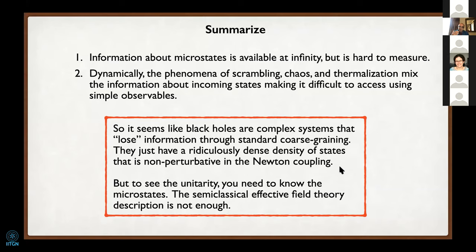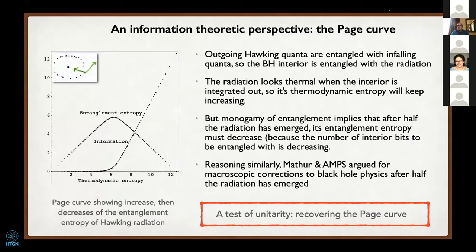In this language it would appear that to see the unitarity of a black hole you somehow need to know the underlying microstates, have access to them, and be able to separate them. The semi-classical effective field theory description is not enough to see the underlying unitarity. So there's another perspective we can take: the information theoretic perspective on unitarity in quantum gravity.